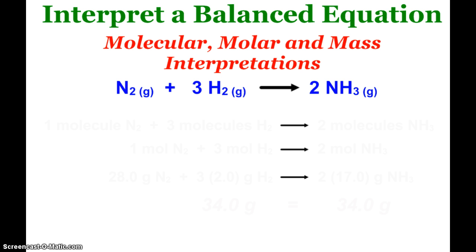Now when we have a balanced equation, you can interpret it on a couple different levels. On the particle, molecular atomic level, the molar level, and then the mass level. So here we have a very famous synthesis of ammonia reaction.